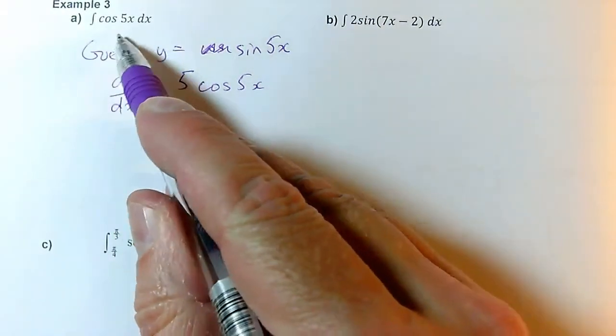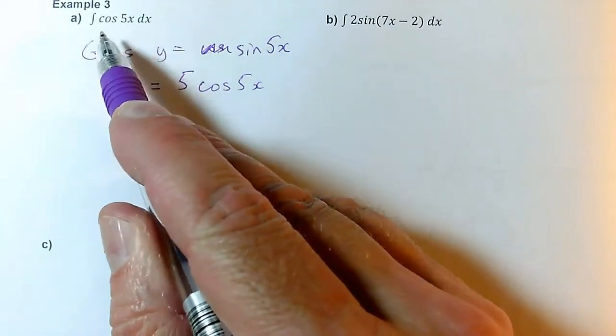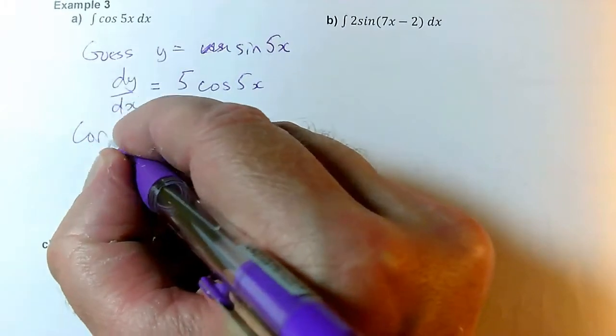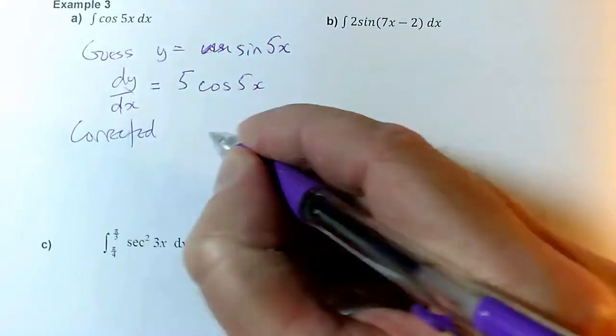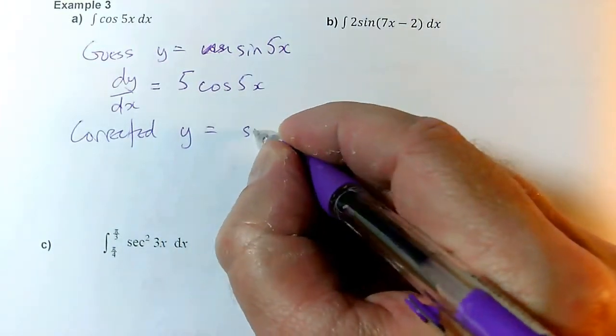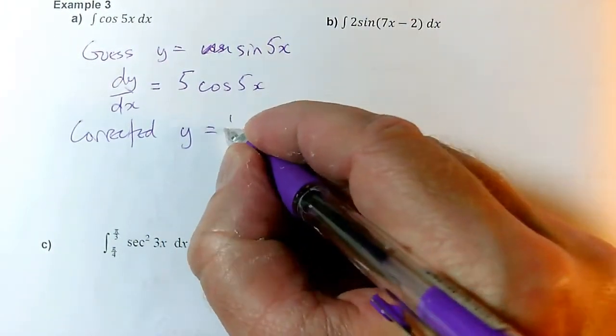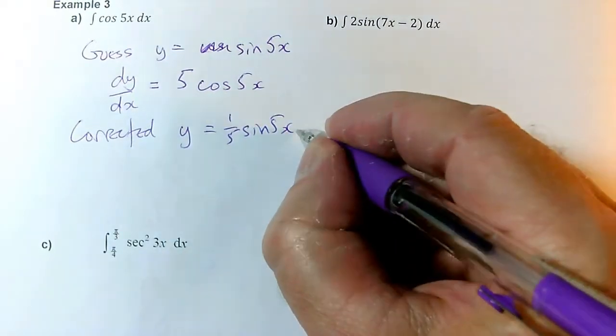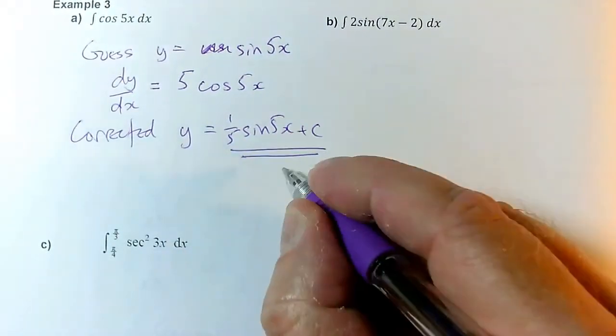But I want the integral of cos of 5x to be the thing that differentiates to just give cos of 5x without this 5 here. So my corrected y is the sine of 5x with a 1 fifth in front of it so that that 5 doesn't appear. Therefore, the answer is a fifth sine of 5x plus c.